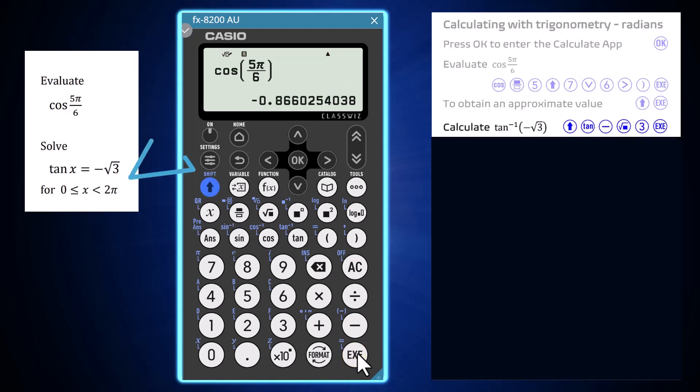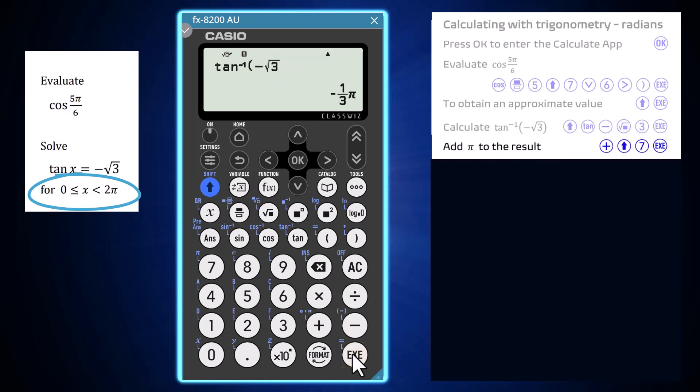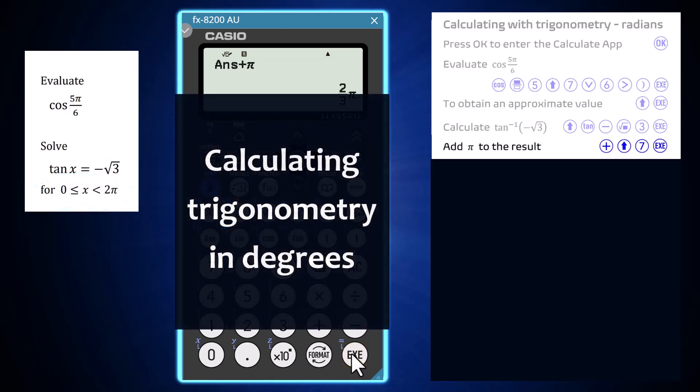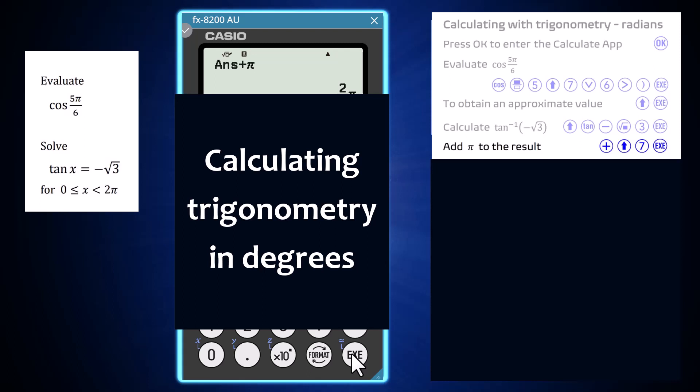To help solve this trigonometric equation, the 8200 can be used to calculate the arctan of negative root 3 via the Shift and Tan key along with the radical template. This command will output the angle closest to zero with a tangent value of negative root 3. As the solution is outside the given domain, with a little thought about the unit circle, a solution to this equation can be obtained by adding π to this result using Shift and 7 to enter π.